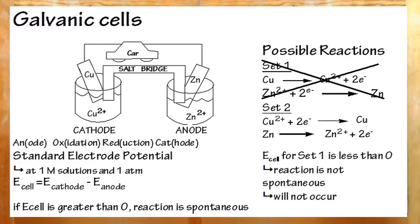You figure out which reaction will occur, the spontaneous one, using standard electrode potential. Add the cathode minus the anode. And if it's greater than zero, the reaction is spontaneous. It will occur.